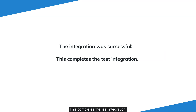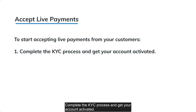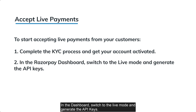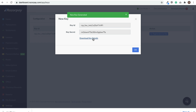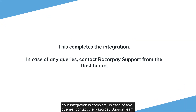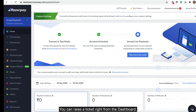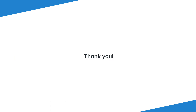This completes the test integration. To start accepting live payments, you need to complete the KYC process and get your account activated. In the dashboard, switch to live mode and generate the API keys. In your .ts file, replace the test mode API key with the live mode API key. Your integration is complete. In case of any queries, contact the Razorpay support team — you can raise a ticket right from the dashboard. You can see the link in the description. Thank you for watching this video.